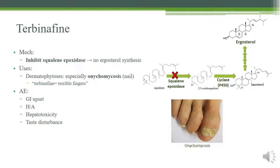Terbinafine works by inhibiting the first step of ergosterol synthesis — squalene epoxidase. If you inhibit squalene epoxidase, you can't add the epoxide group and cannot initiate ergosterol synthesis, which is critical for the fungal cell membrane. Terbinafine is reserved for the worst type of dermatophyte infections. Derma means skin and phyte means eater, so dermatophytes are skin eaters. Terbinafine targets onychomycosis — nail fungus, the nail eaters.